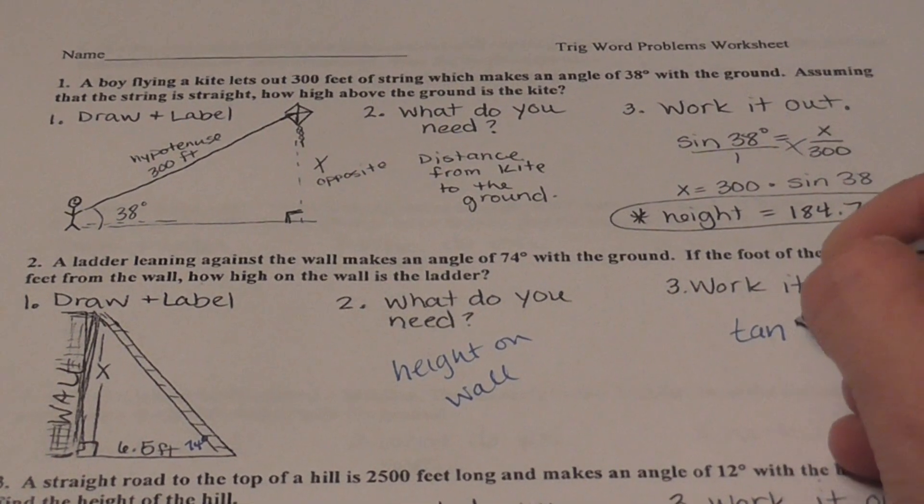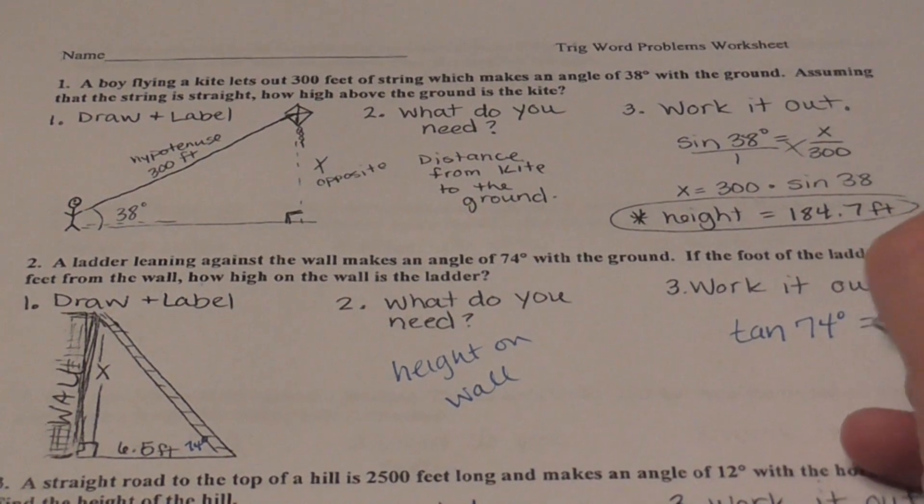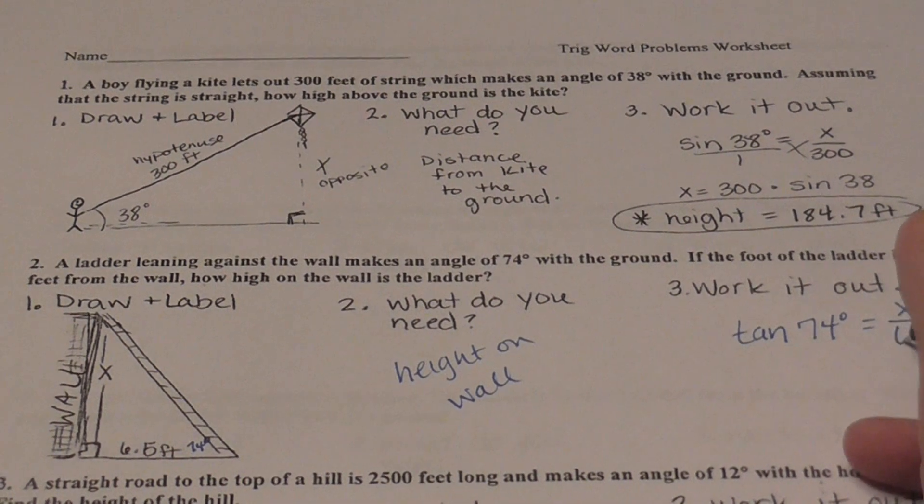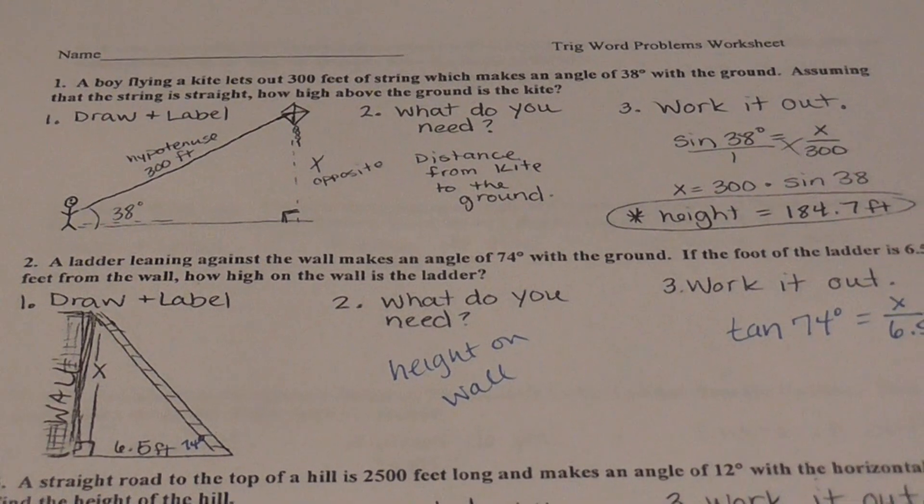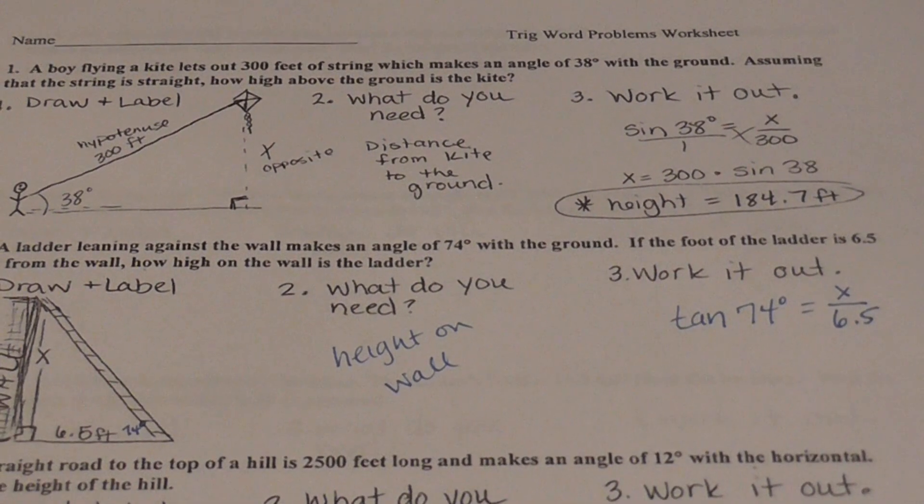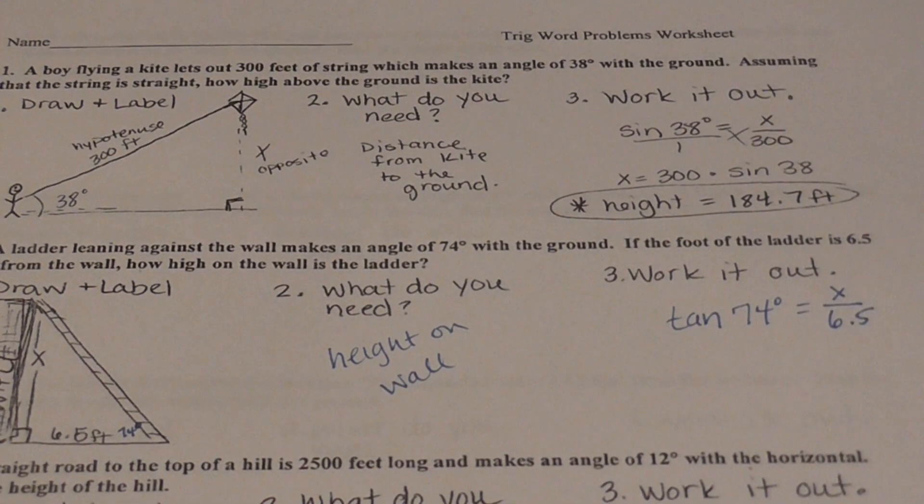So I'm going to put tangent of my angle equals opposite side over my adjacent measure. I'm going to multiply both sides by 6.5. Plug it in my calculator and I'll have the solution for X.